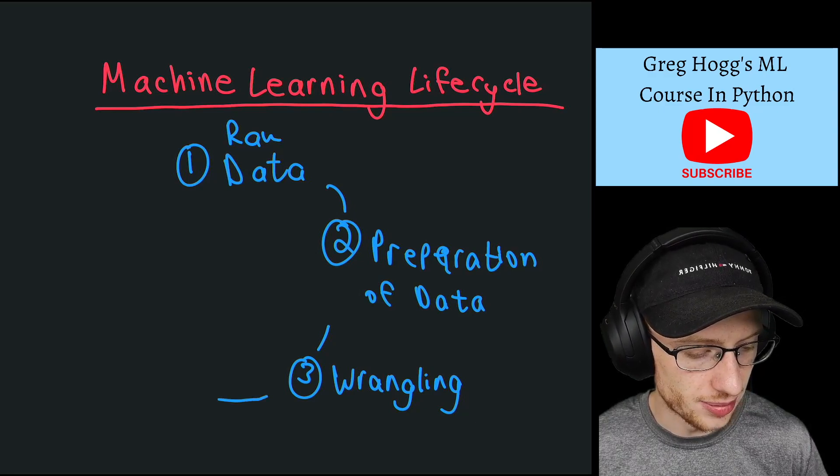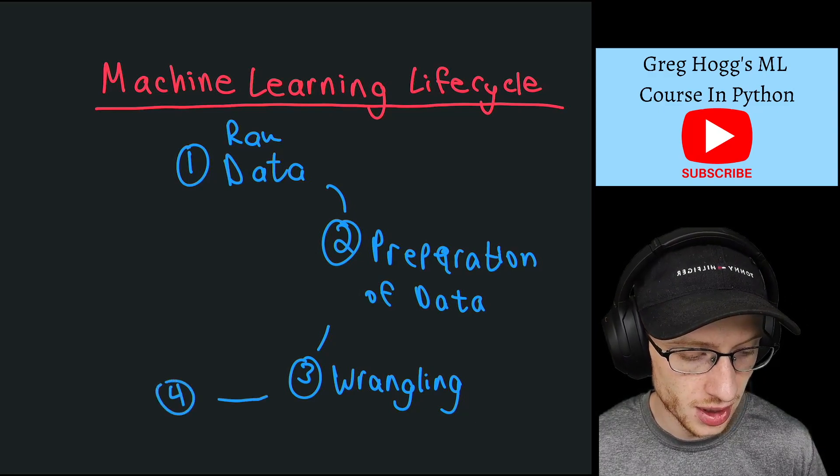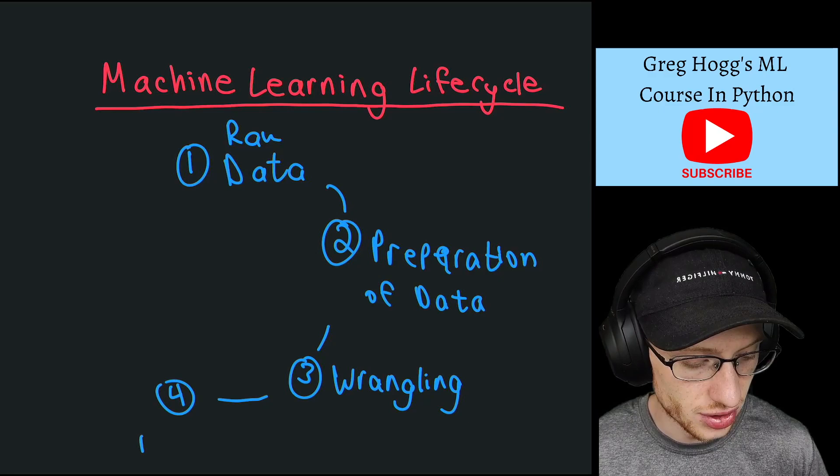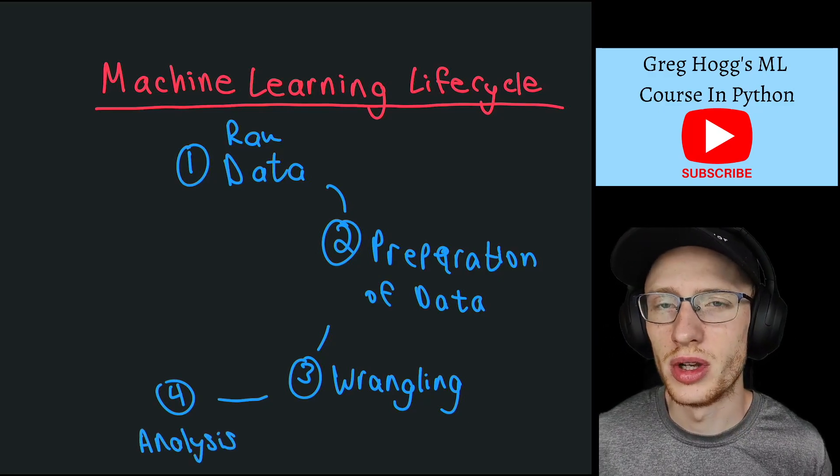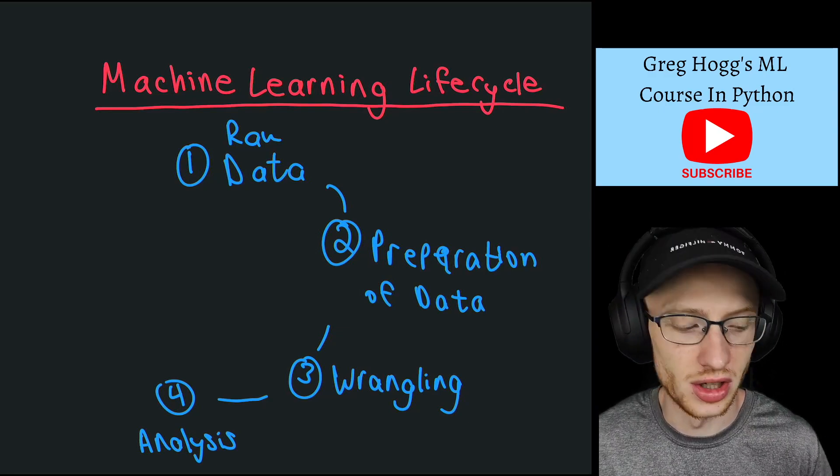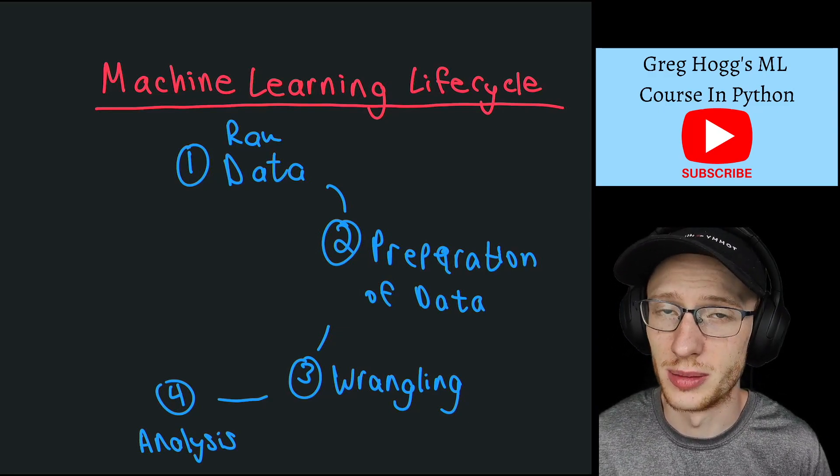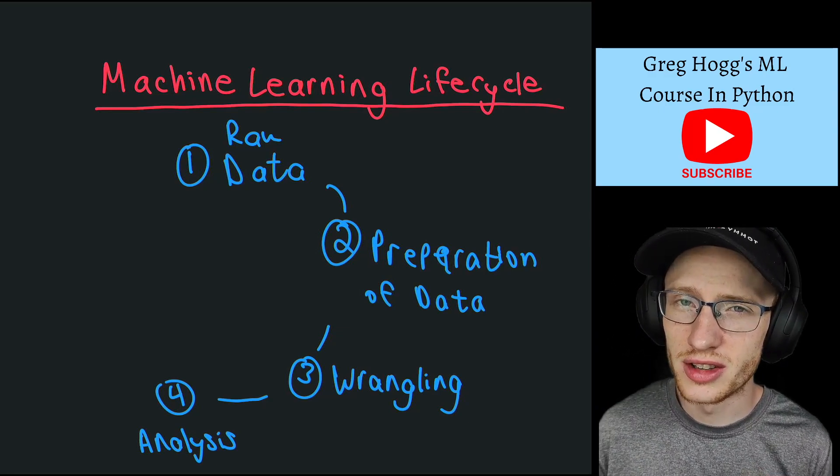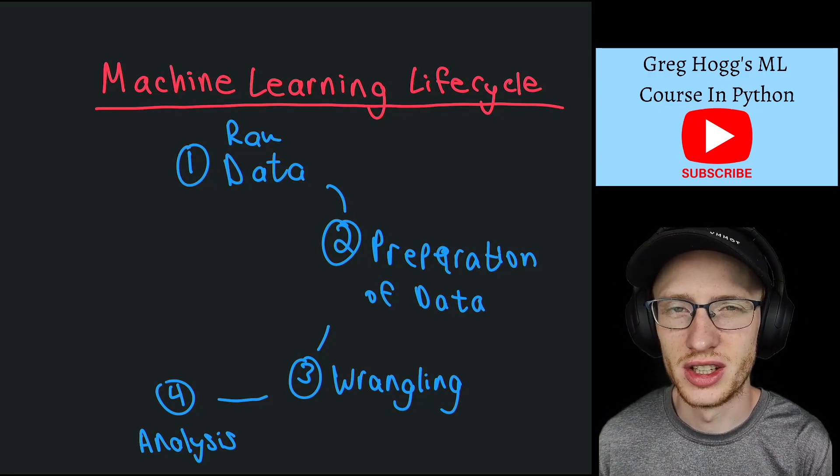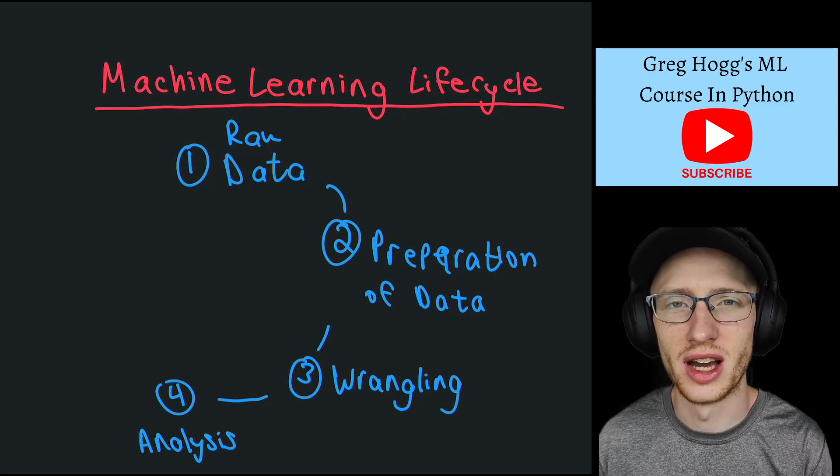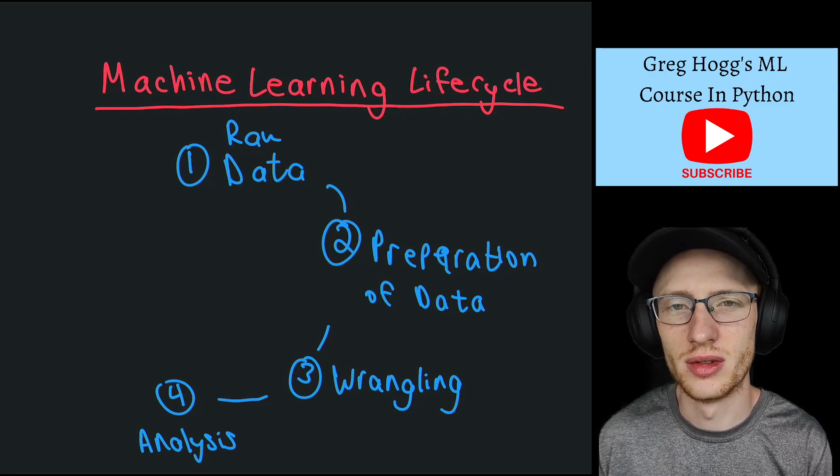And so because of that, often step four is what we call just straight up analysis. You could maybe omit this step and say it's included in the other two, like steps three or two, except analysis really just means you're looking at the data. There's a lot of statistical techniques you might want to do with these things, like see how they're related to each other.